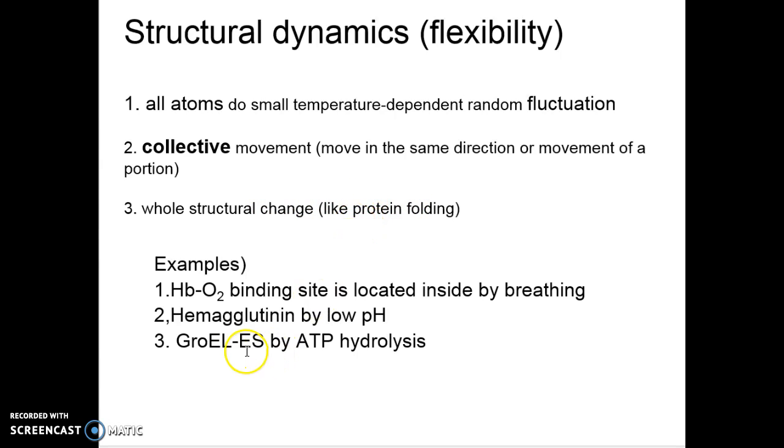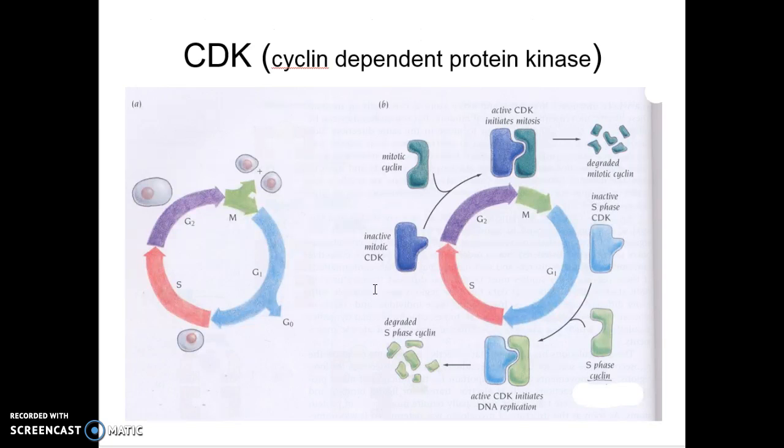We already saw some categories belonging to the second in hemoglobin by low pH and GroEL-ES induced by ATP and GroES binding. An earlier example not explained in this case will be myoglobin in oxygen binding. We are going to see several cases for the second type of collective movement.